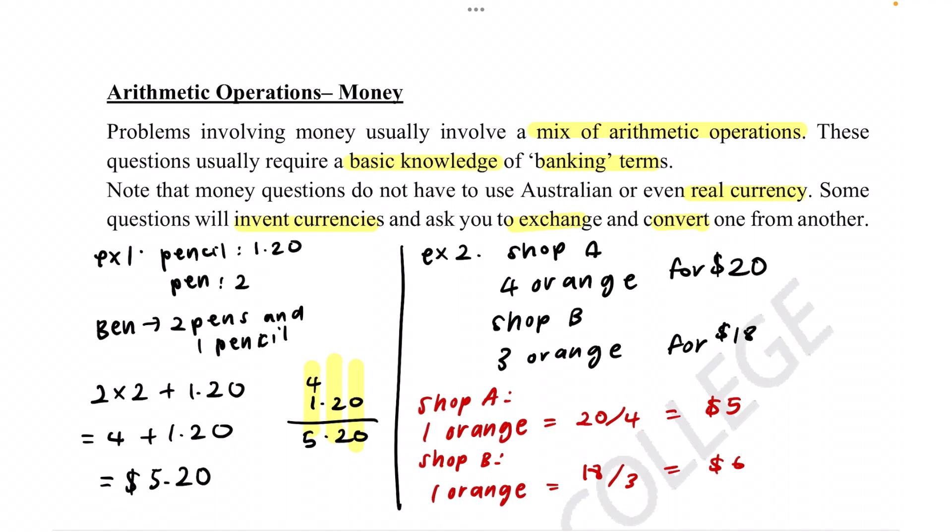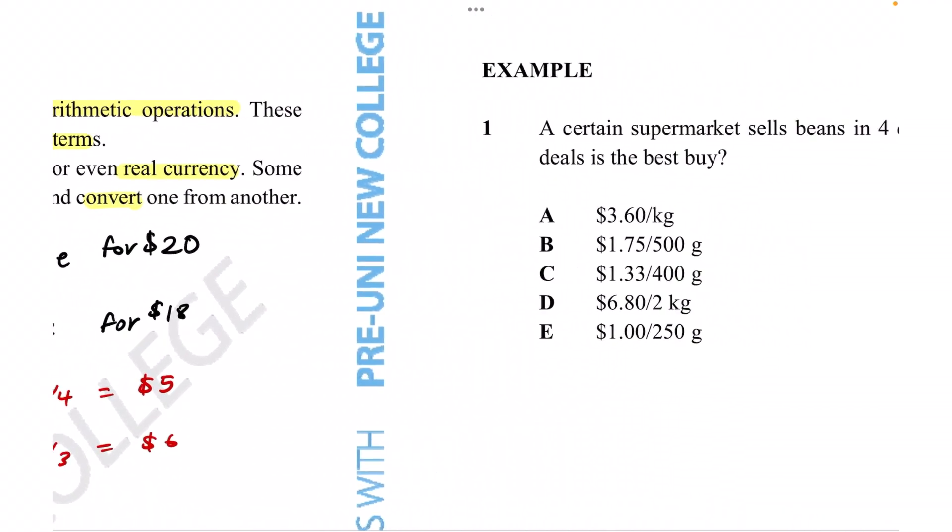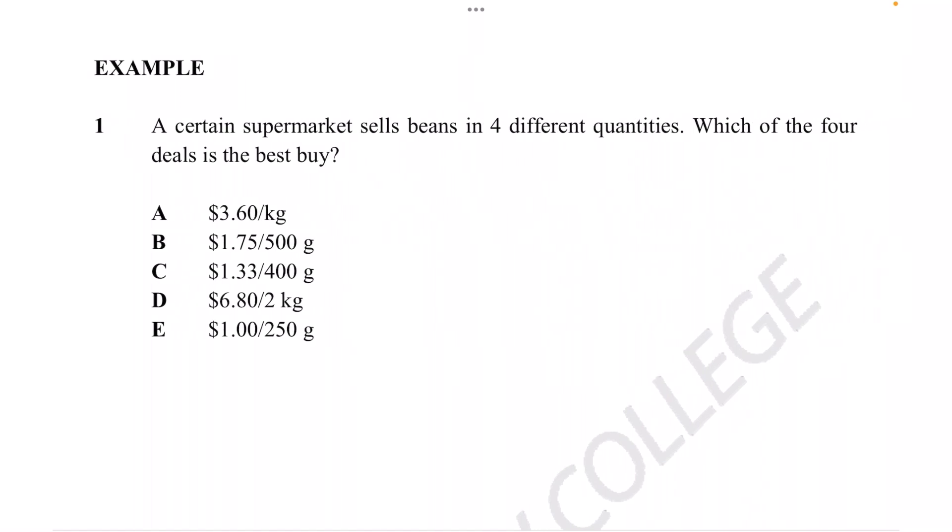Now let's do some proper questions. A certain supermarket sells beans in four different quantities. Which of the four deals is the best buy? Before we do anything, we need to convert everything to the same measurement so we can actually compare the prices. As you can see, maybe we can convert it to kilograms.